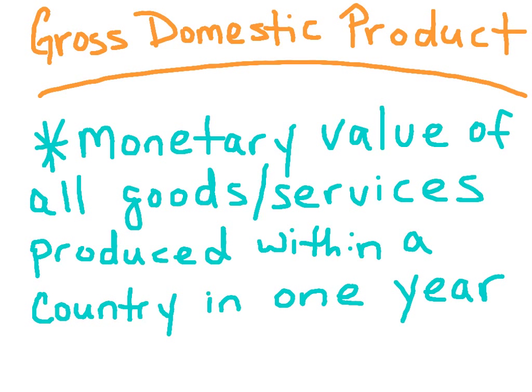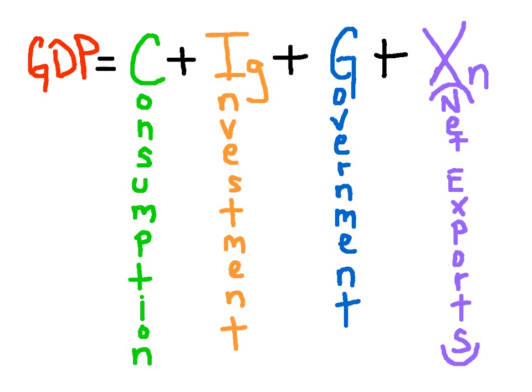The GDP is the monetary value of all final goods and services produced within a country's or an economy's borders in one year. There are two basic ways of calculating a nation's GDP.